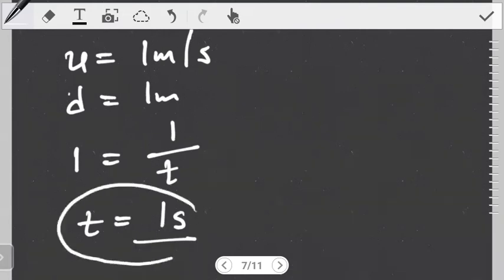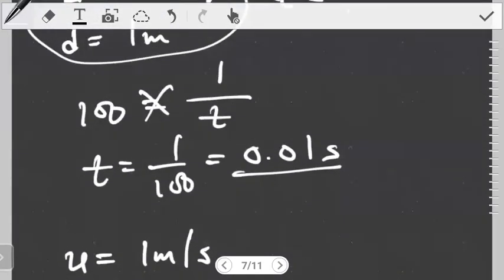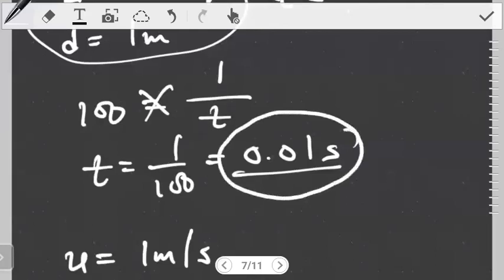Look at the difference. If the speed is slow, the time it takes for the impulse to travel is one second. But if the impulse is moving very fast, the time it takes for the impulse to reach the brain is very, very small, 0.01 seconds. What's the advantage of the impulse moving very fast?